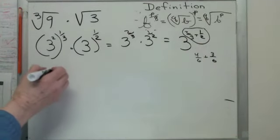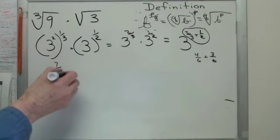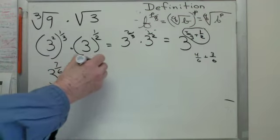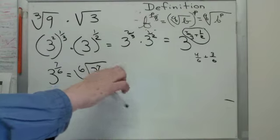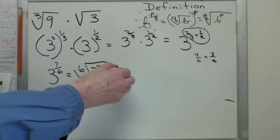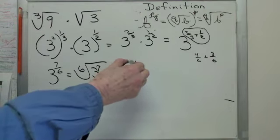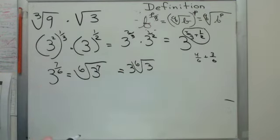So now I have 3 to the 7 over 6, which could be written as the 6th root of 3 to the 7th. Oh boy. If the 7 3's, 1 can come out. I could write this as 3 times the 6th root of 3.